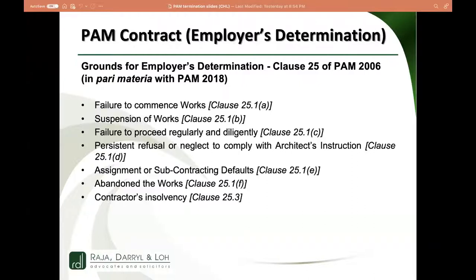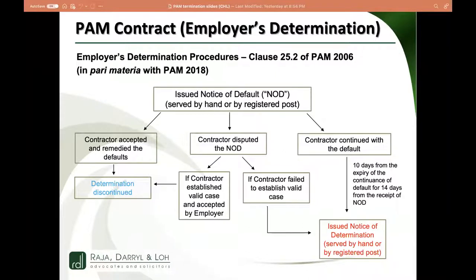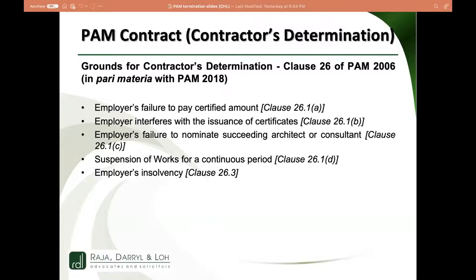The procedure adopted in PAM is always the two-step procedure: a notice of default, and then a notice of determination. You must have grounds to issue a notice of default and serve it properly. Various scenarios will then follow — whether the defaulting party remedies the default or not. If they don't remedy the default, only then does your right to issue the notice of determination arise. All these procedures and timelines are well mapped out in the PAM contract and must be followed.